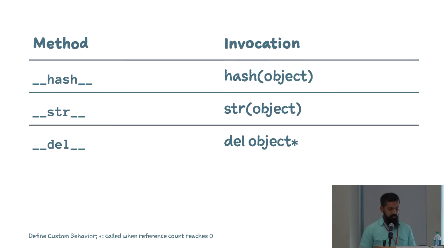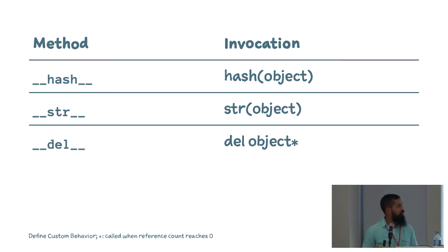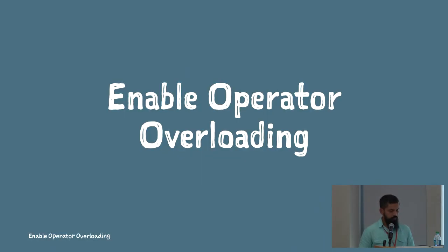Here are some other examples of magic methods that let you customize your object's behavior. The dunder hash magic method is called when Python wants to evaluate the hash of an object. The dunder del magic method gets called when you delete an object — a quick note: it actually gets called when the reference count of your object goes to zero rather than right when you call del on it.